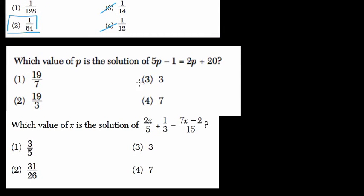Which value of p is the solution here? What I would do is get my isolated number terms on the right-hand side and my p terms on the left-hand side. So I'm going to subtract 2p from both sides and add 1 to both sides at the same time, and move those around.